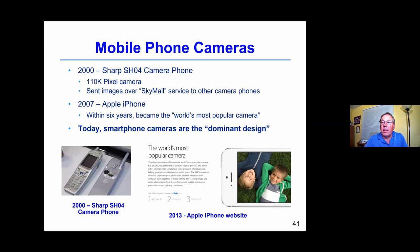The first commercial camera phone came out in 2000 — a Sharp product with about a 100,000-pixel sensor — and you could basically send images to another person with a similar camera phone. Within seven years Apple came out with the iPhone, somewhat late to the smartphone market, but with the right features at the right point and the right design. By 2013 the Apple iPhone website was calling it 'the world's most popular camera,' and indeed smartphones have become the dominant design for mass-market photography.